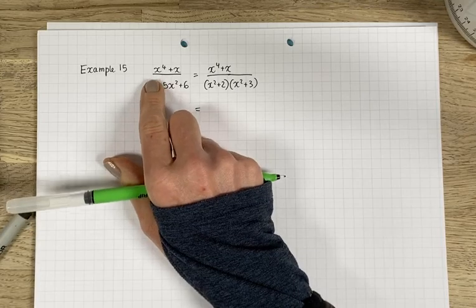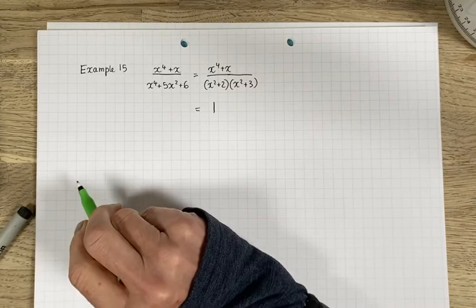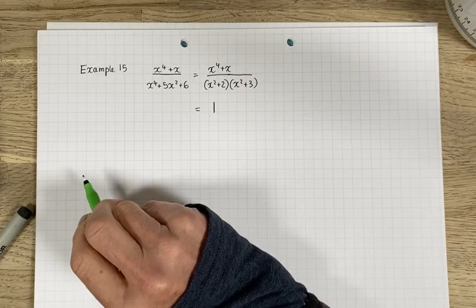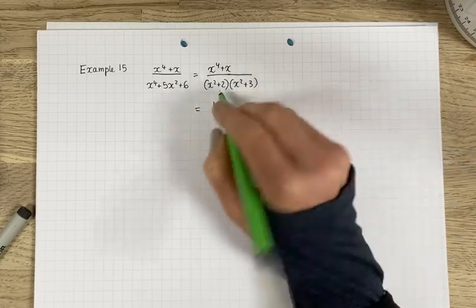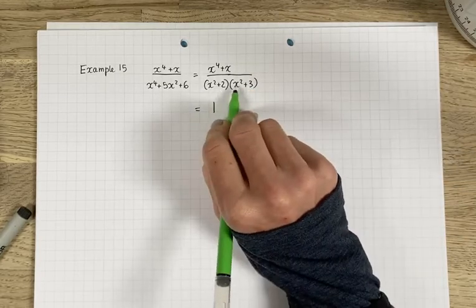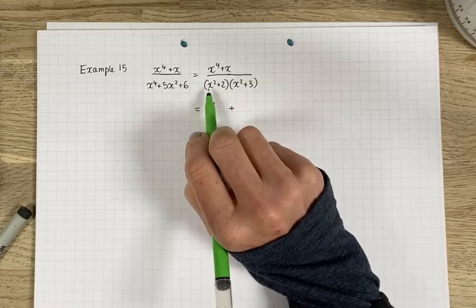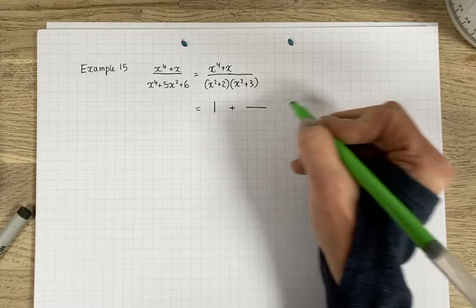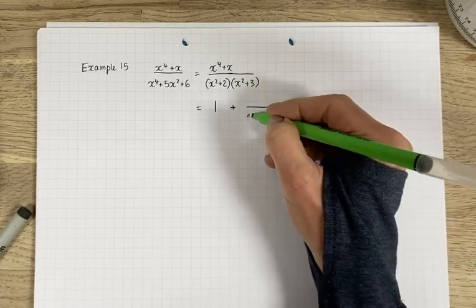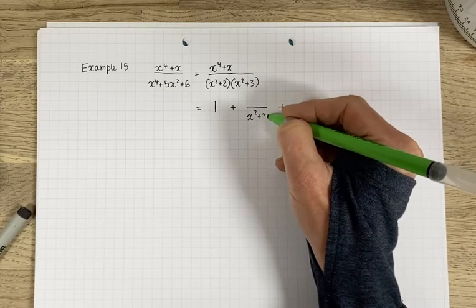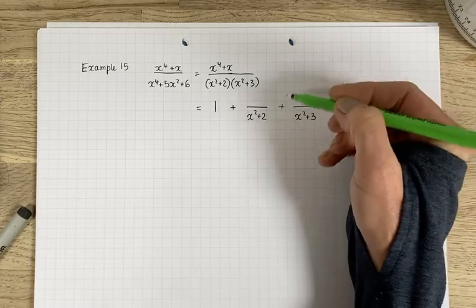there will be one x to the power of 4 in x to the power of 4. So this term here, you could just call it one straight away, otherwise call it a and then do the others. So here you've got two factors in the denominator, which is factorized as far as possible. So you'll be left with two extra fractions that need to be added because there's two factors. So x squared plus 2 will go over one fraction, x squared plus 3 over the other.